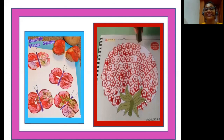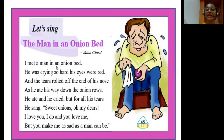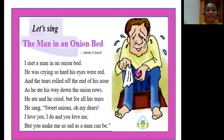On page 65, there is a poem to read and enjoy. The title is 'The Man in an Onion Bed,' written by John Ciardi. Let's read it: 'I met a man in an onion bed, he was crying so hard his eyes were red, and the tears rolled off the end of his nose as he ate his way down the onion rows. He ate and he cried, but for all his tears he sang — sweet onions oh my dears, I love you I do I do, and you love me, but you make me as sad as a man can be.'